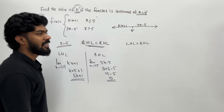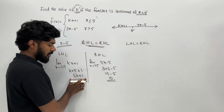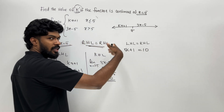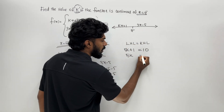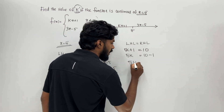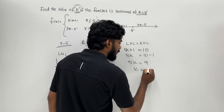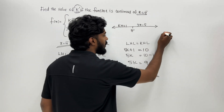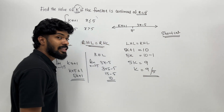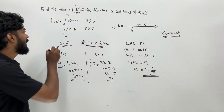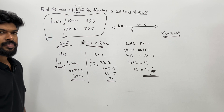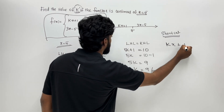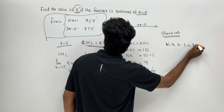For continuity, left hand limit equals right hand limit. So 5k plus 1 equals the right hand limit. Substituting x equals 5 into 3x minus 5 gives 15 minus 5 equals 10. So 5k plus 1 equals 10, which means 5k equals 9, giving k equals 9 by 5. This is the shortcut method: substitute x equals 5 directly into both expressions and set them equal.